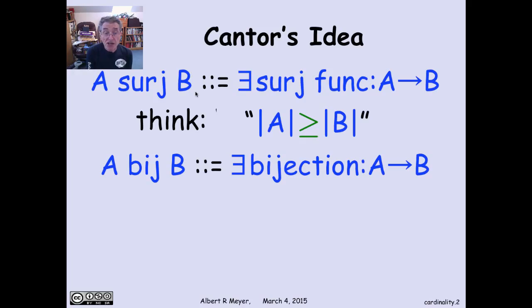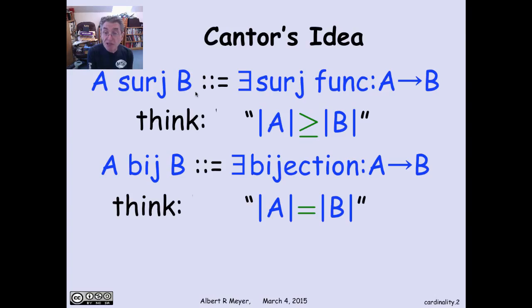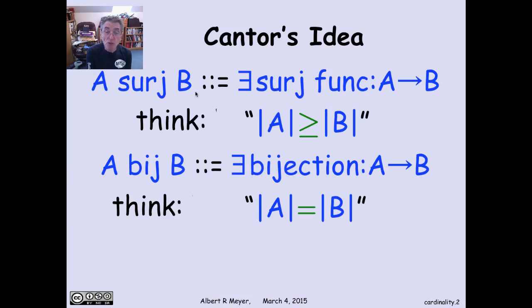Similarly, bijection is even easier. A bi-B means there's a bijection from A to B, and we interpret that as saying A and B are the same size. For finite sets, it literally means A and B have the same number of elements. For infinite sets, we adopt the bijective relation as meaning: I don't know what their size is, but I know it's the same because there's a perfect one-to-one correspondence between A's and B's.